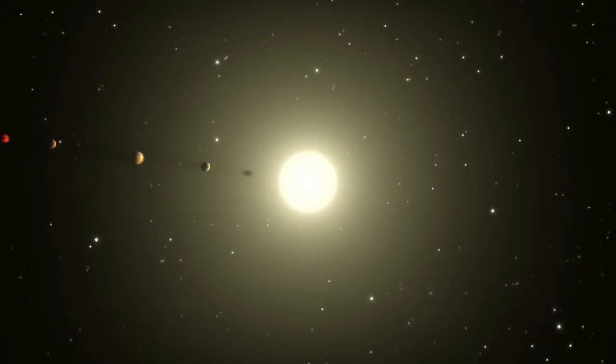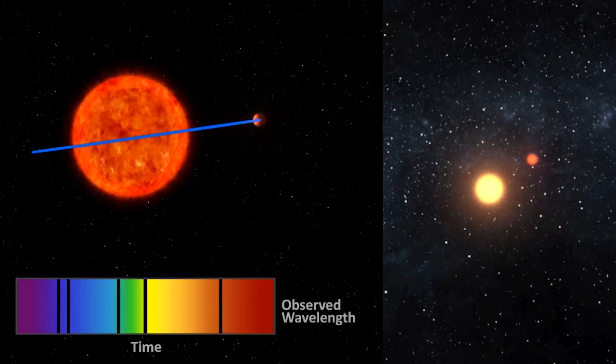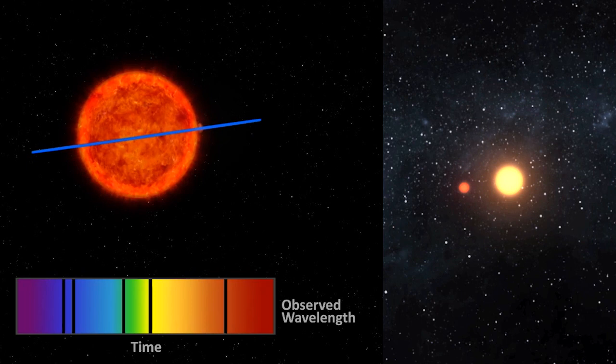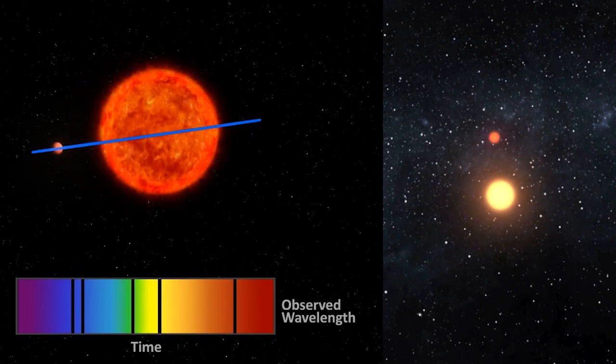The rest of the planets were discovered by radial velocity, which measures the motion of a star toward or away from you as it reacts to the motion of the planet in its orbit.